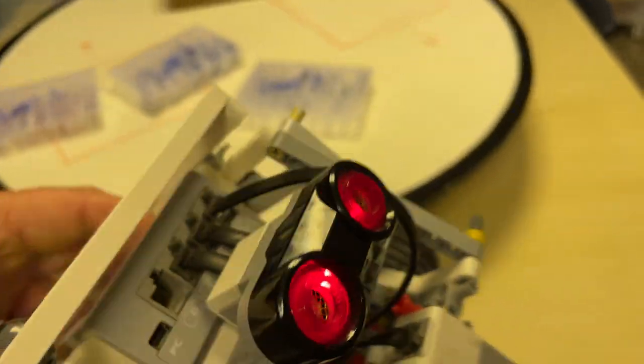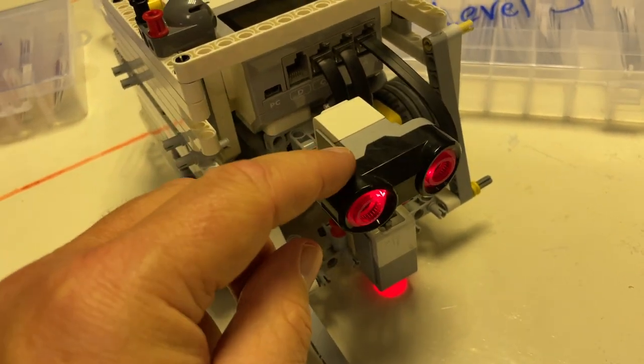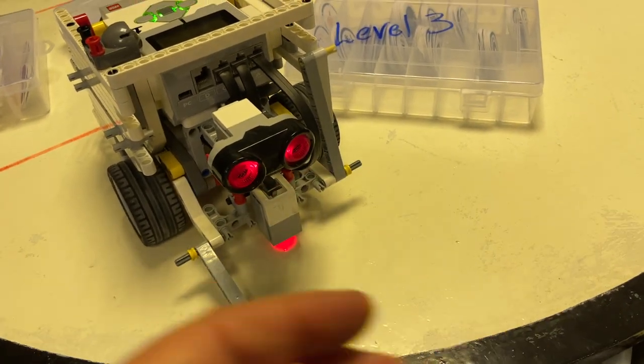You have to have this sensor right here, which is the ultrasonic sensor. It measures distance from the front of the robot, or from where the sensor is, measuring how far things are.